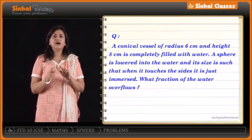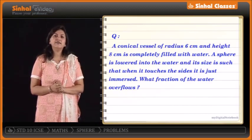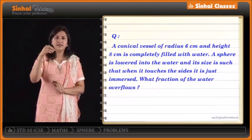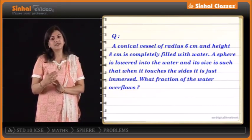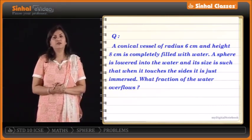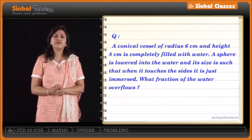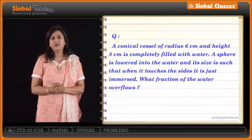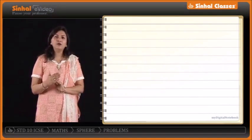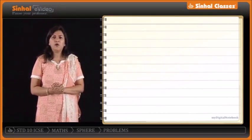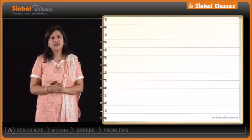In this problem, we are given a conical vessel and a sphere is immersed in it, causing water to overflow. We want to find the fraction of water that overflows. That can be given by volume of the sphere upon volume of the conical vessel.